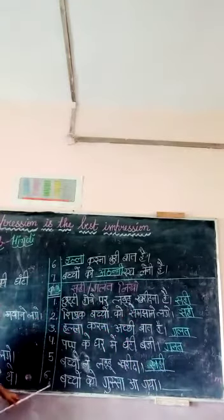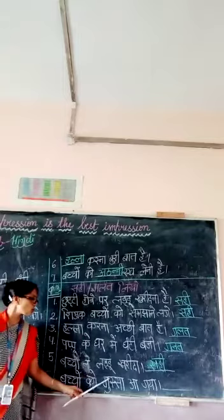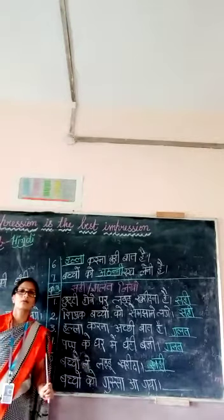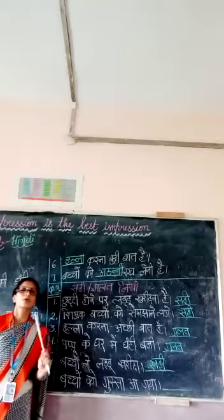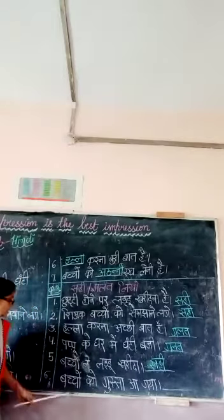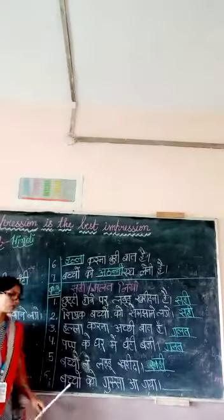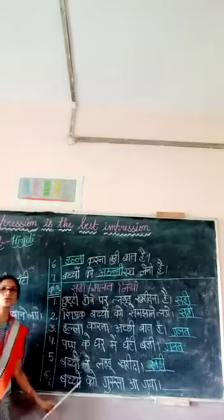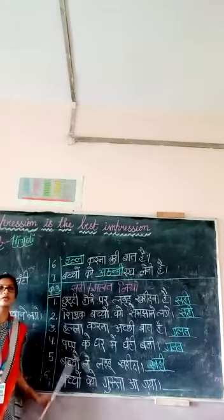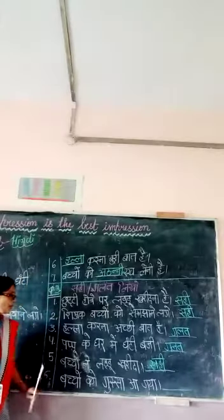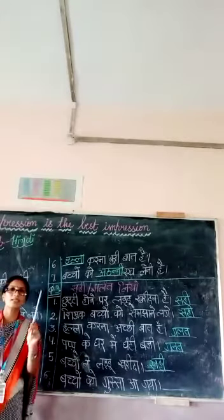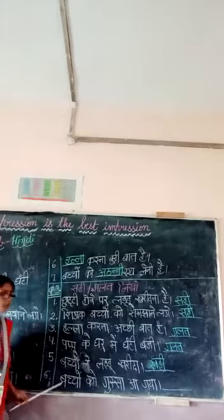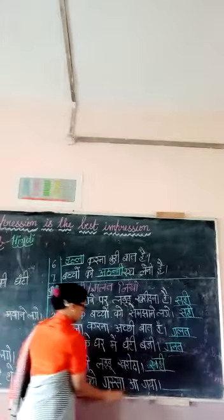Now sixth one. Bacho ko gursa a gaya. Kis to gursa aya tha? Who was angry? Teacher ko. Here which person? Yaha pe student diye hai. Toh bacho ko gursa aya tha? No. Gursa kisko aya tha? Sikshya ko. So therefore this sentence is wrong, galab.